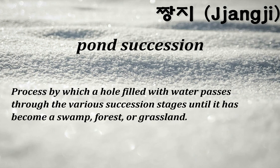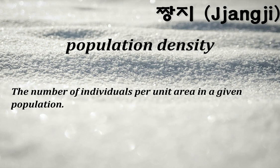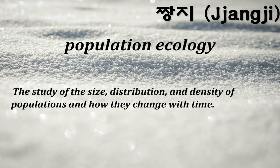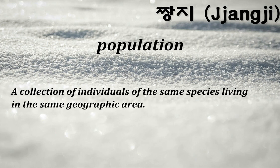Pond succession: process by which a hole filled with water passes through various succession stages until it has become a swamp, forest, or grassland. Population density: the number of individuals per unit area in a given population. Population ecology: the study of the size, distribution, and density of populations and how they change with time. Population: a collection of individuals of the same species living in the same geographic area.